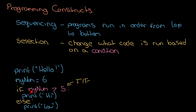We have my_num set to six, so 'my_num greater than five' is true. Because the condition is true, the top part of the if statement runs — we get 'high' printed out, not 'low'. But if I change the code so that my_num equals three instead, then 'my_num greater than five' now equals false.